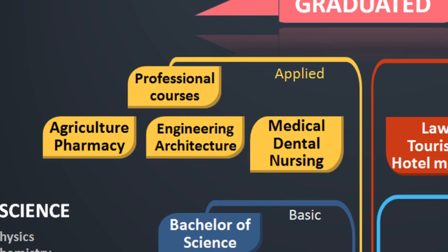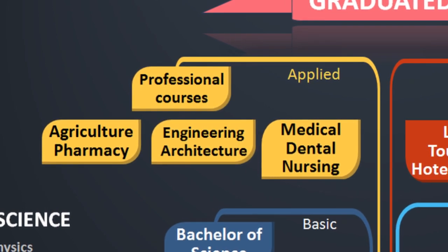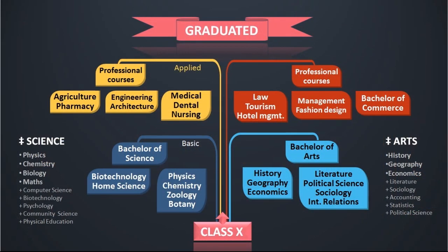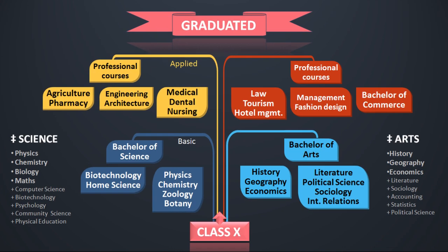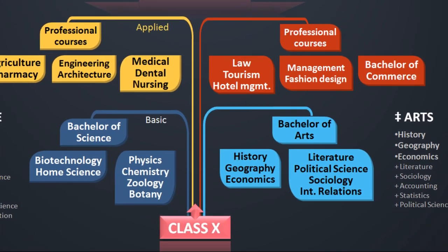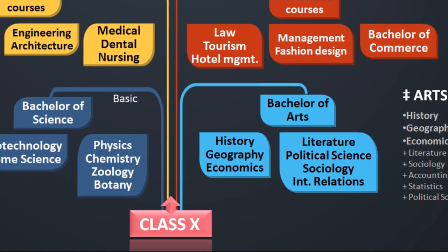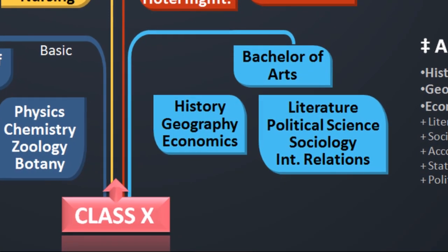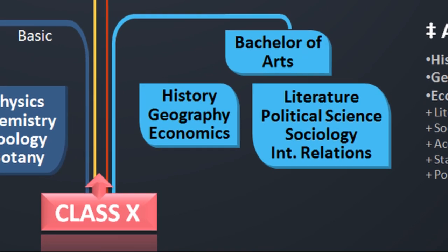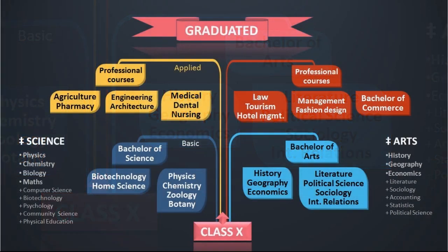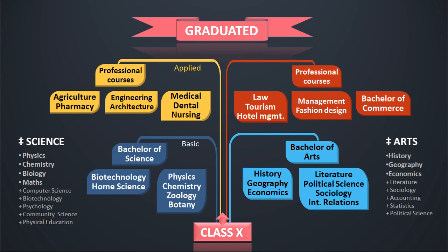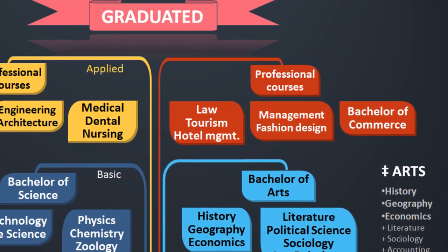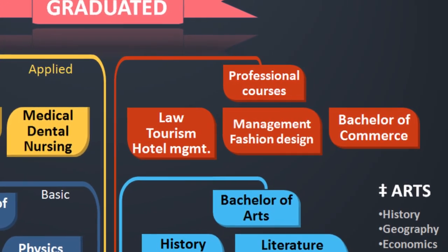In the arts programs, if you have a BA, BA is popular at the graduate level. If you have a BA in history, geography, economics, literature, political science, sociology, or international relations, BA is one of them. You will find a good course in the arts, and tourism, and hotel management, and marketing and business management. The design is with fashion.